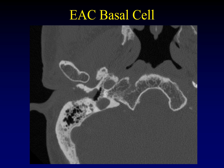Here's another malignancy affecting the external auditory canal. This time the soft tissue completely fills the external auditory canal, but look at these little rat bites on both the anterior and posterior walls. Those are the erosions we're looking for to suggest neoplasm. This one happens to be a basal cell carcinoma.